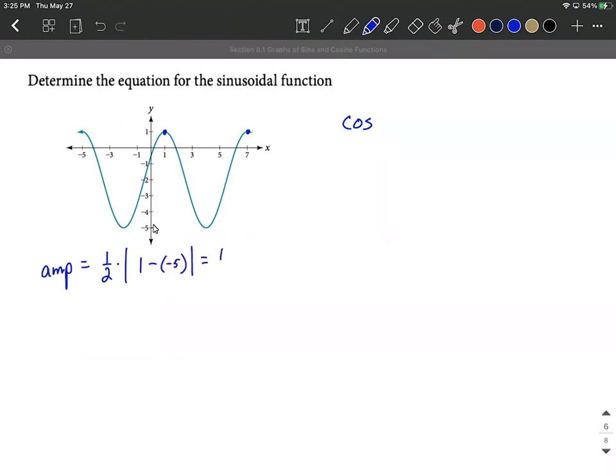So that's going to be one half multiplied by the absolute value of one minus a negative five, which is one plus five makes six. Absolute value of six is just going to be six. So half of six makes three. So that kind of tells us we're going to get a three sitting out in front here as a multiple. It's going to be a stretch of the entire function.